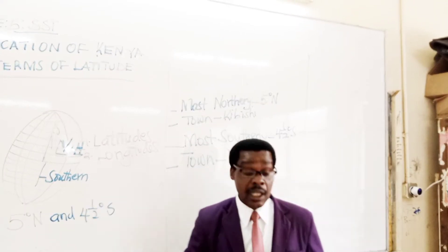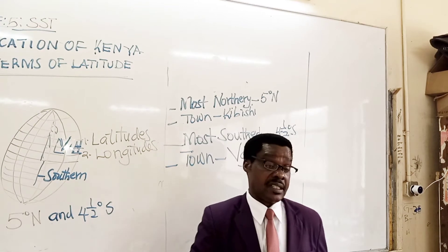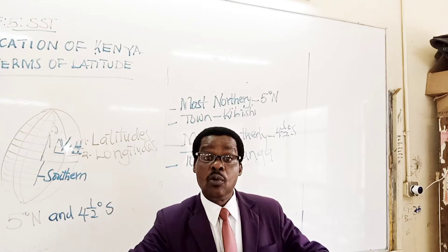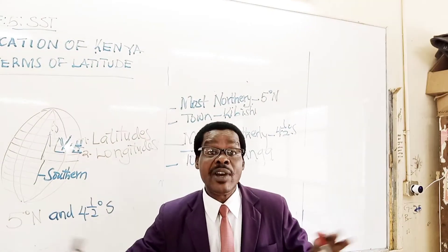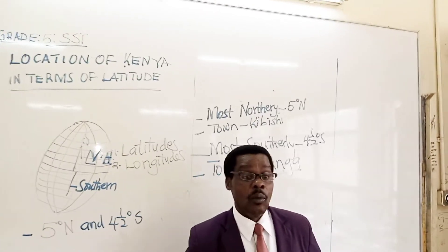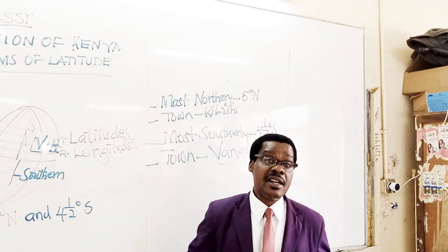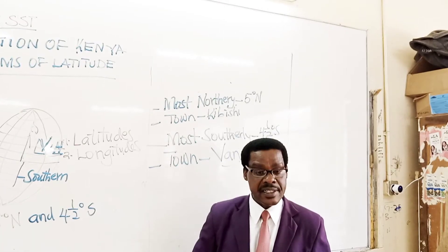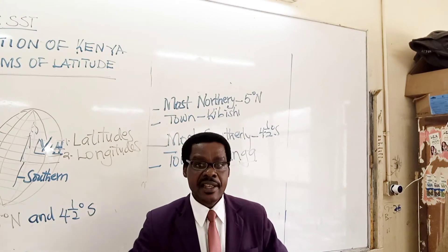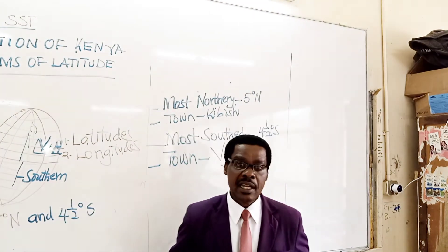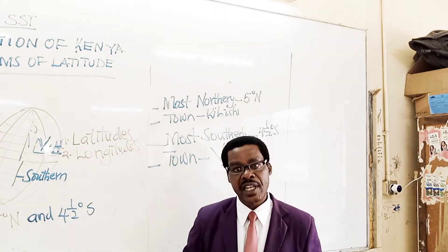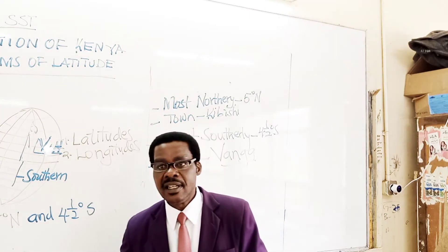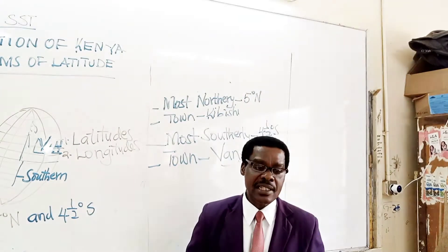Remember, boys and girls, the equator is one of the latitudes. The equator divides Kenya into almost two equal halves — it passes through Kenya. That is why we always receive sunlight from morning to sunset, about 12 hours, because we are within the equator. That is why we enjoy the beautiful climate we have here in Kenya.